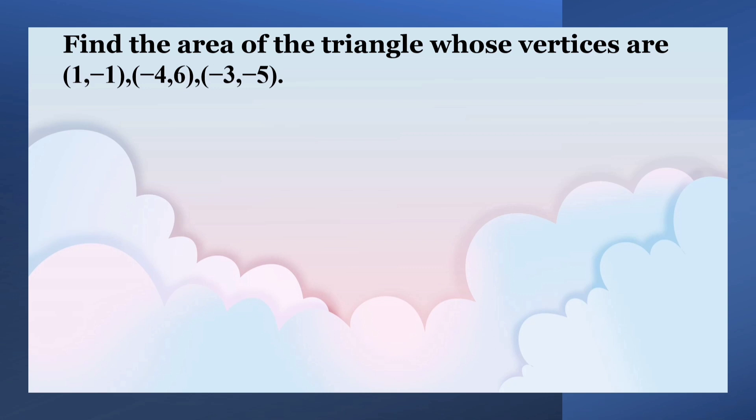We know that area of a triangle whose vertices are (x1, y1), (x2, y2), and (x3, y3) is half into x1 into (y2 minus y3) plus x2 into (y3 minus y1) plus x3 into (y1 minus y2).